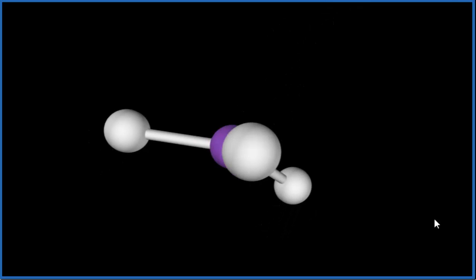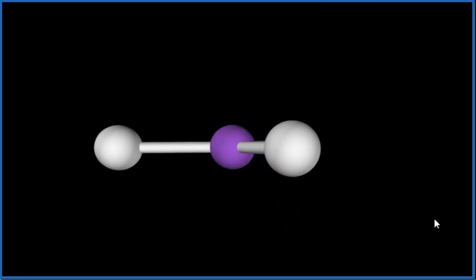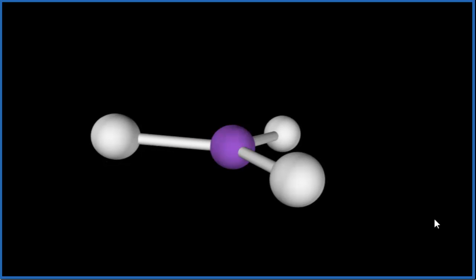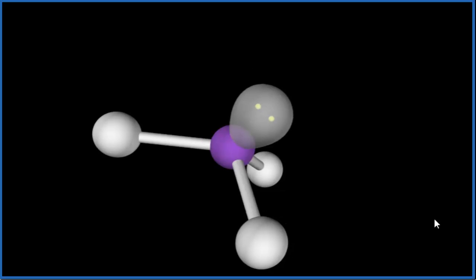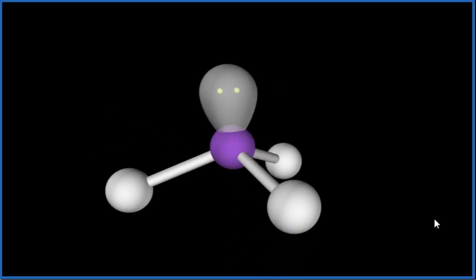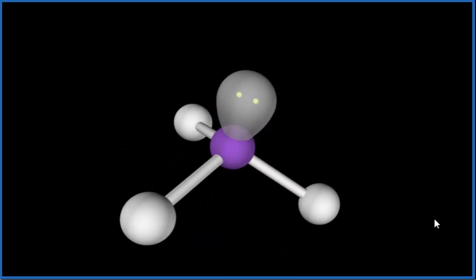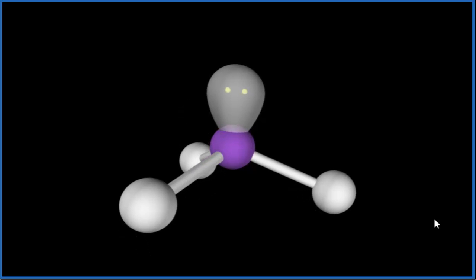Now we have this trigonal planar molecular geometry, and let's add to that our lone pair, that one lone pair we had in our Lewis structure. And there it is. So we end up with this trigonal pyramidal molecular geometry, with this lone pair on top and everything pushing down, these iodine atoms all pushed away from each other.